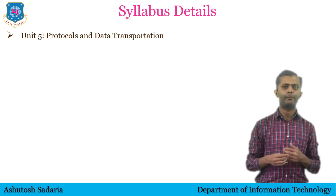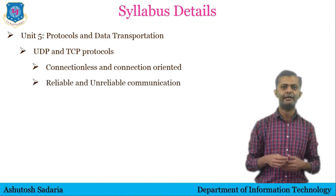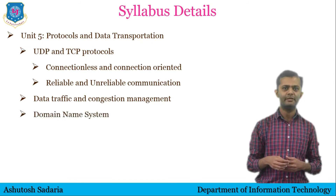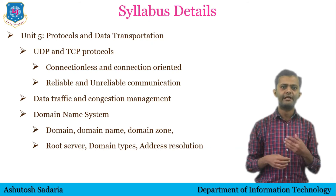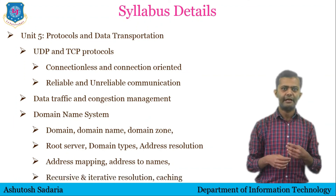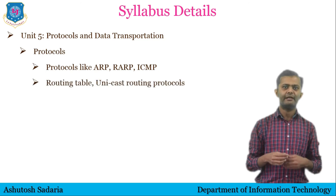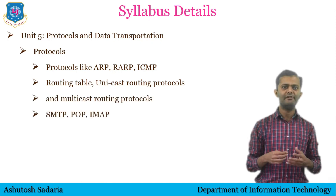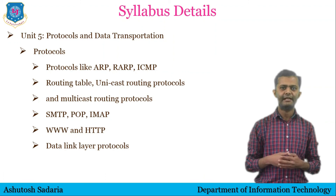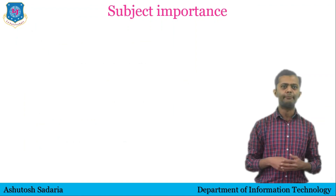In the fifth unit, we will see Protocols and Data Transportation. This includes UDP and TCP protocols, connectionless and connection-oriented communication, reliable and unreliable communication, data traffic and congestion management, and the Domain Name System covering domain name, domain zone, root server, domain types, address resolution, address mapping, recursive and iterative resolution and caching. We will also see protocols like ARP, RARP, ICMP, routing table, unicast and multicast routing protocols, SMTP, POP, IMAP protocols, WWW and HTTP, and data link layer protocols like simplest, stop-and-wait, stop-and-wait ARQ, go-back-N ARQ and selective repeat ARQ.